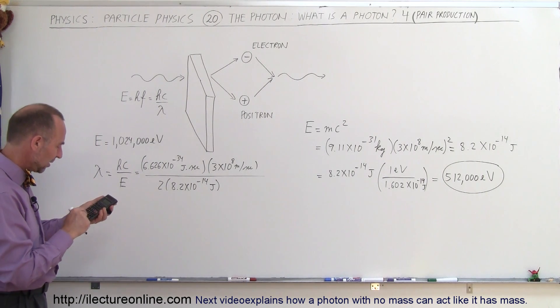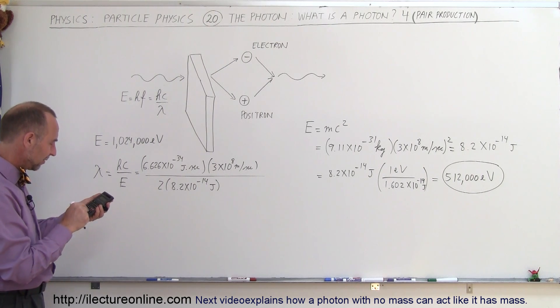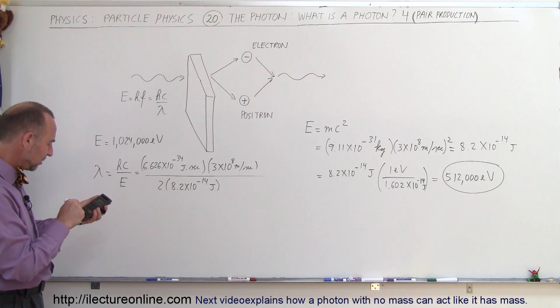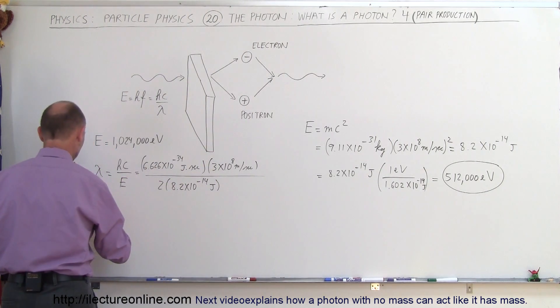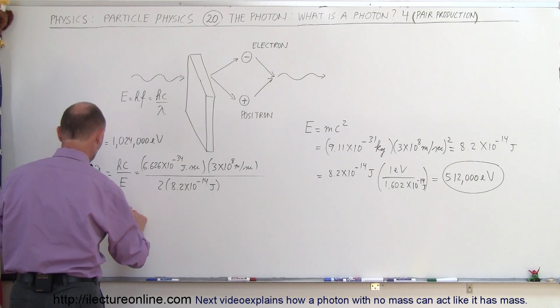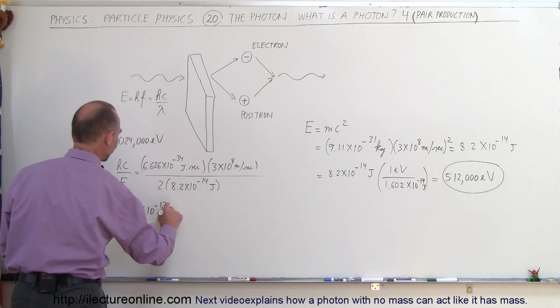So 6.626 E to the minus 34 times 3 E to the 8 divided by 2 and divided by 8.2 E to the minus 14 equals, and so the wavelength would have to be lambda is equal to 1.21 picometers, so times 10 to the minus 12 meters.